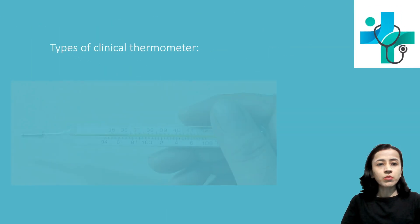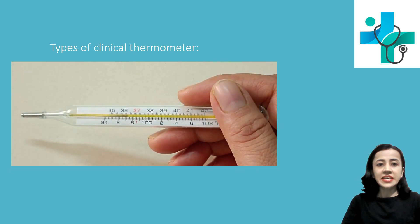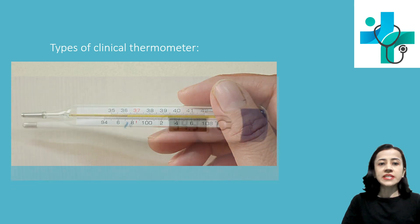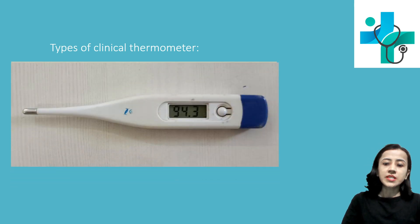Types of clinical thermometer: it is of mainly two types which we are using commonly. One, that is mercury thermometer, and second one, that is digital thermometer.